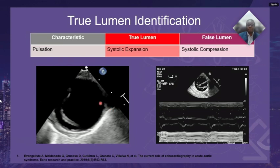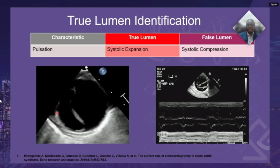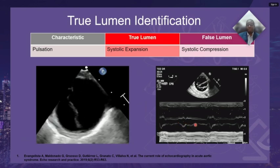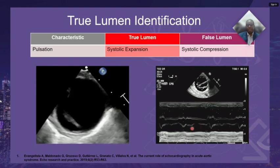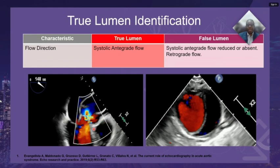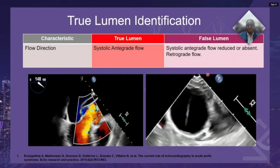We can consider pulsation, where the flow of blood from the cardiac cycle produces systolic expansion of the true lumen, whereas it can also produce systolic compression of the false lumen. This can be seen clearly on 2D images, but is made even more clear with M-mode imaging using the ECG and QRS complex to locate the expansion of the true lumen and compression of the false lumen during systole. Flow direction is another differentiator: the true lumen shows systolic antegrade flow, while the false lumen may show reduced or absent antegrade flow and occasionally retrograde flow.